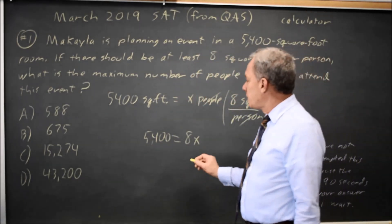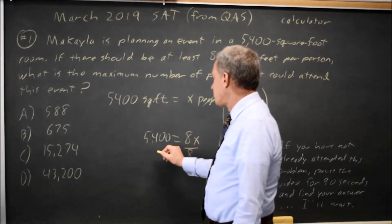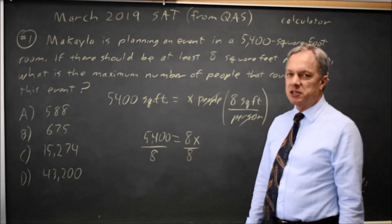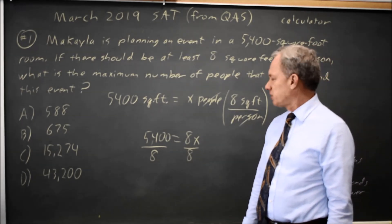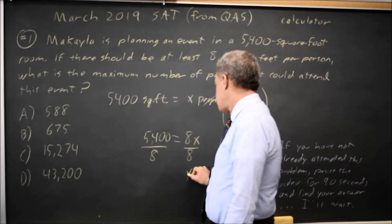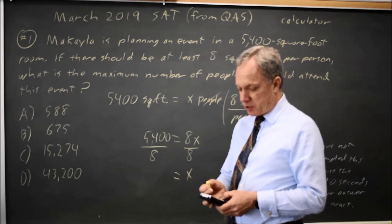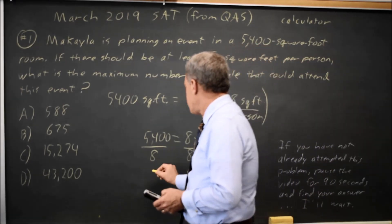Since x is multiplied by 8, I'm going to divide by 8 to get x by itself. I have to do the same thing for both sides of the equation, so I divide both sides by 8. That gives me x equals—I'm not doing that by hand since this is a calculator question—I'm going to ask the calculator: 675.